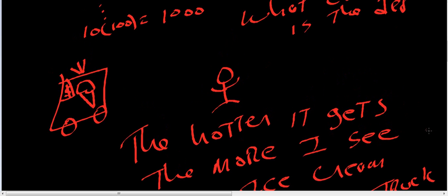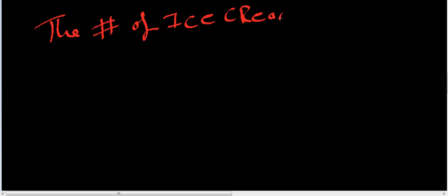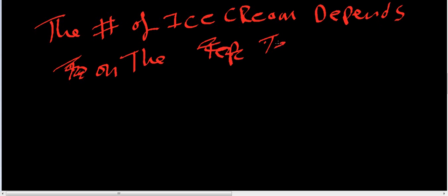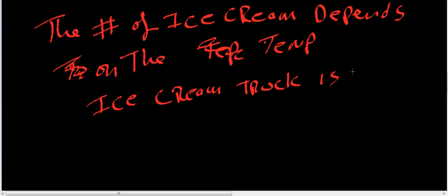So, to think about this, the number of ice cream trucks depends on the temperature. Let's just think about this. Your ice cream truck is your dependent variable. Your temperature is the independent variable.